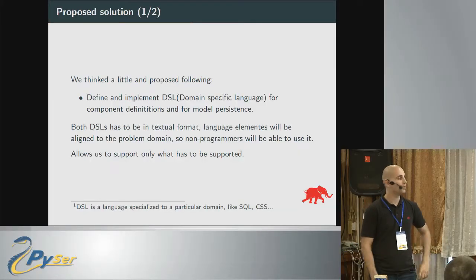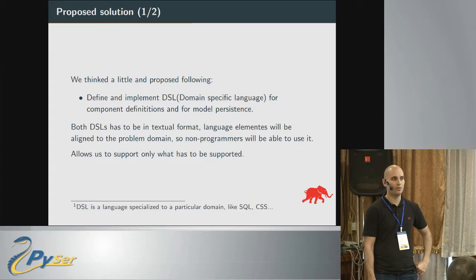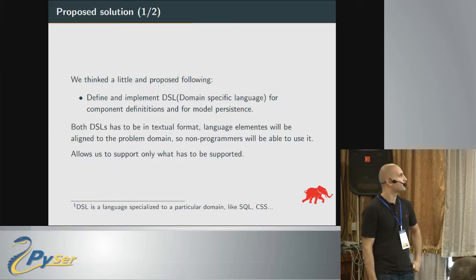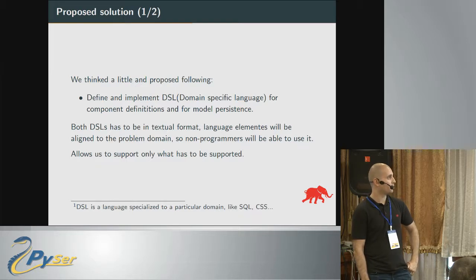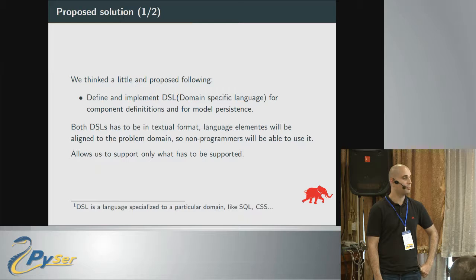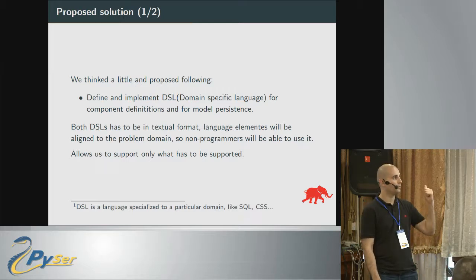We proposed a solution: we will implement a custom DSL in our company — we will not use XML, JSON, or some other generic data format. Some attributes of this new language: it must be a textual format to be able to version control it in a better way than binary. Elements of that language will be aligned to the domain. For example, if a user in the domain of renewable energy makes schematics with components, ports, terminals, connections, and wires, then that language will have those elements — not XML tags or generic terms.